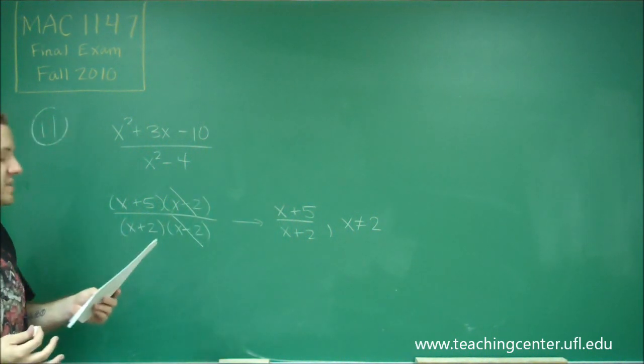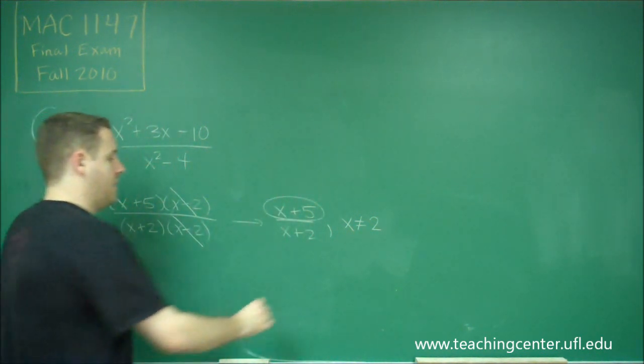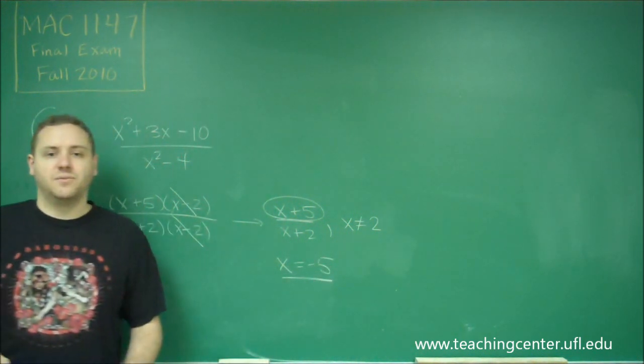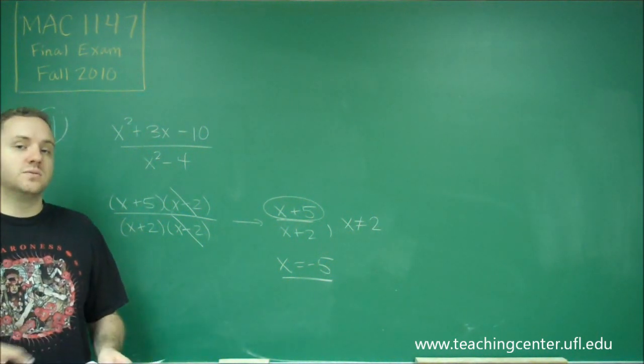So now, what are the zeros of this function? Well, that's whenever the top is equal to zero, and that would simply be when x is equal to negative 5. So always make sure you factor and cancel as much out as you can before you start to answer those questions.